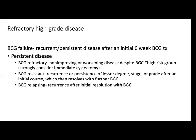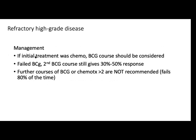For refractory high-grade disease, after the initial six-week BCG treatment, it is considered BCG failure — refractory, resistant, or relapsing. However, you may wait up to six months before declaring failure, because documentation shows that from 57%, if you wait to six months, it may improve to 80%. So three to six months after therapy is acceptable to wait for BCG response. If the initial course was chemotherapy, another BCG course should also be considered unless it fails — then other treatment options may be used, such as shifting your regimen.